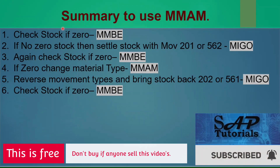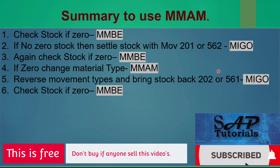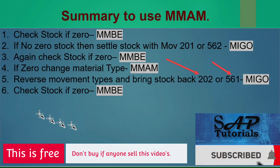Here is the summary of what we have done: First, check stock in MMBE for the material. If stock is not zero, settle it to zero using movement type 562, or alternatively movement type 201 (cost center), or assign it to a project or WBS element. Verify stock is zero, then go into MMAM and change the material type. Finally, reverse the movement you used — in this example movement types 562 and 561 — and verify the stock is restored.